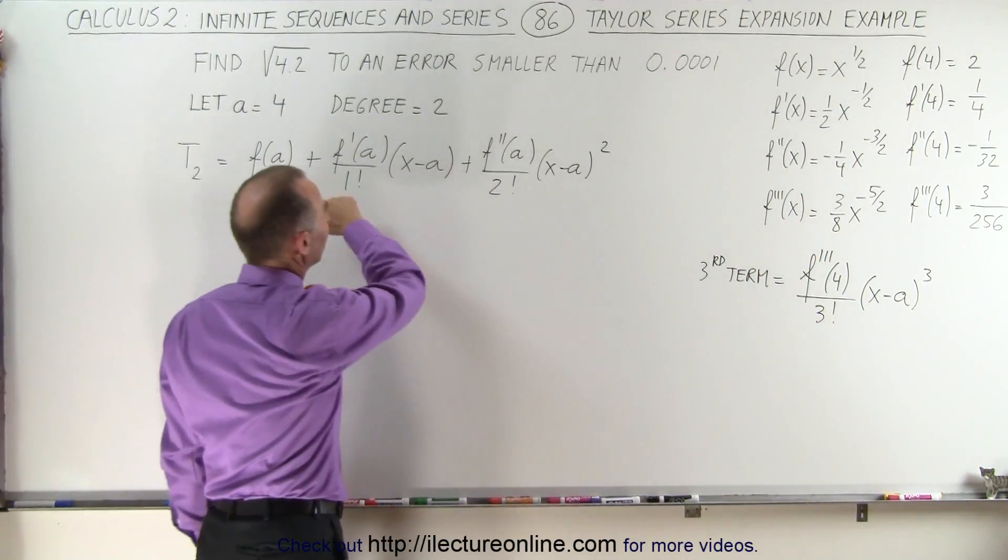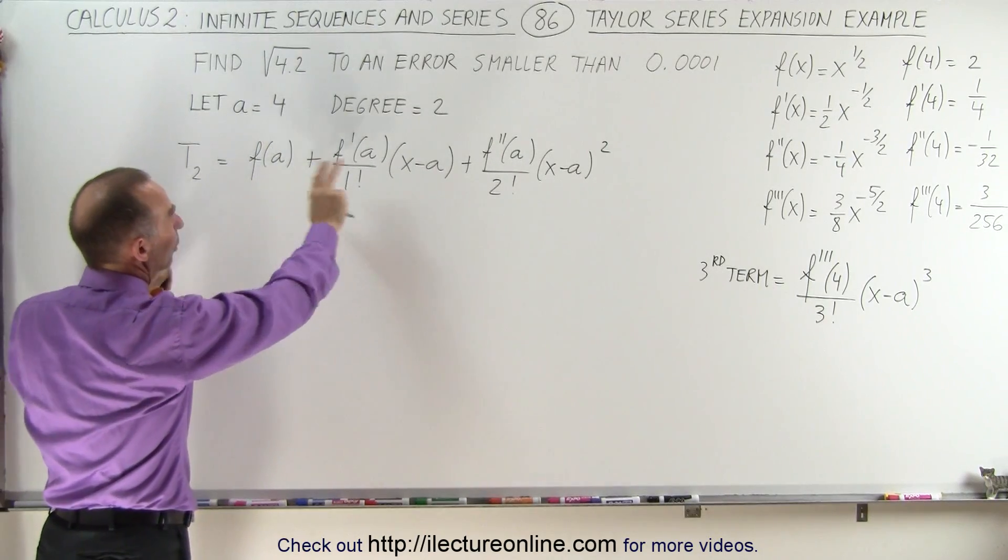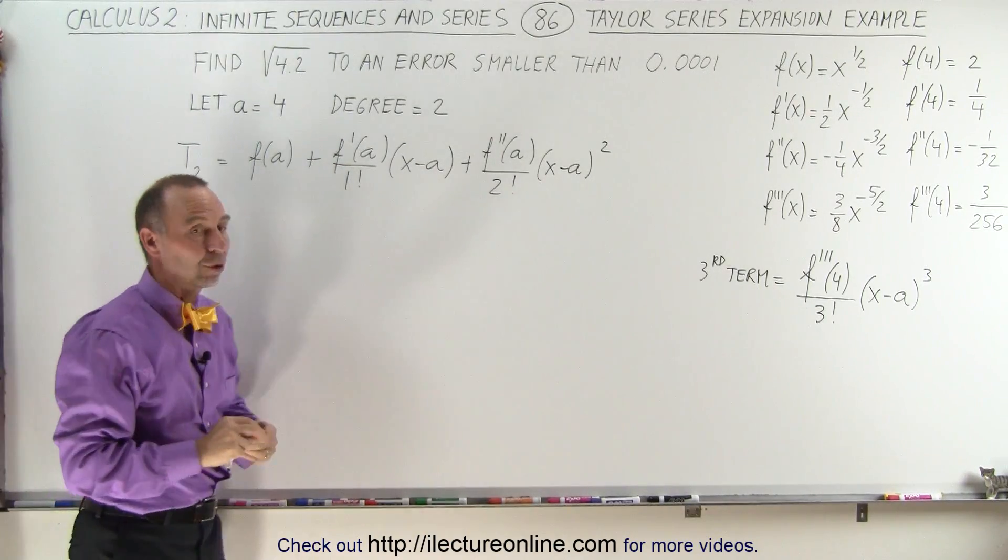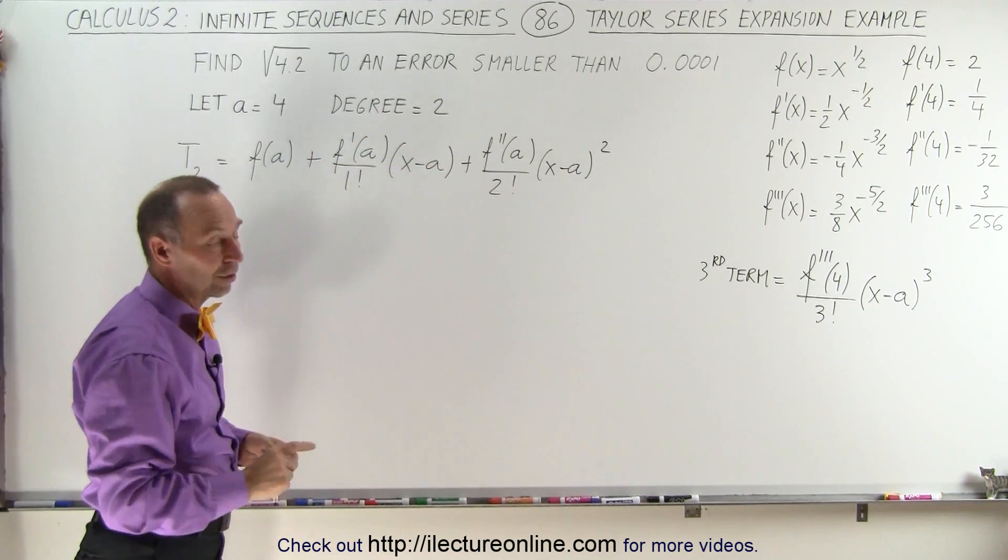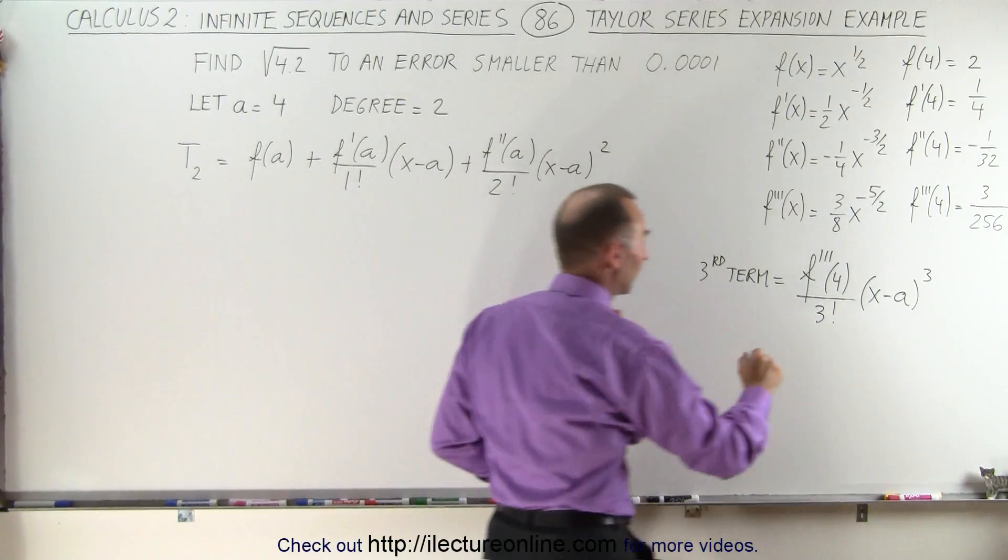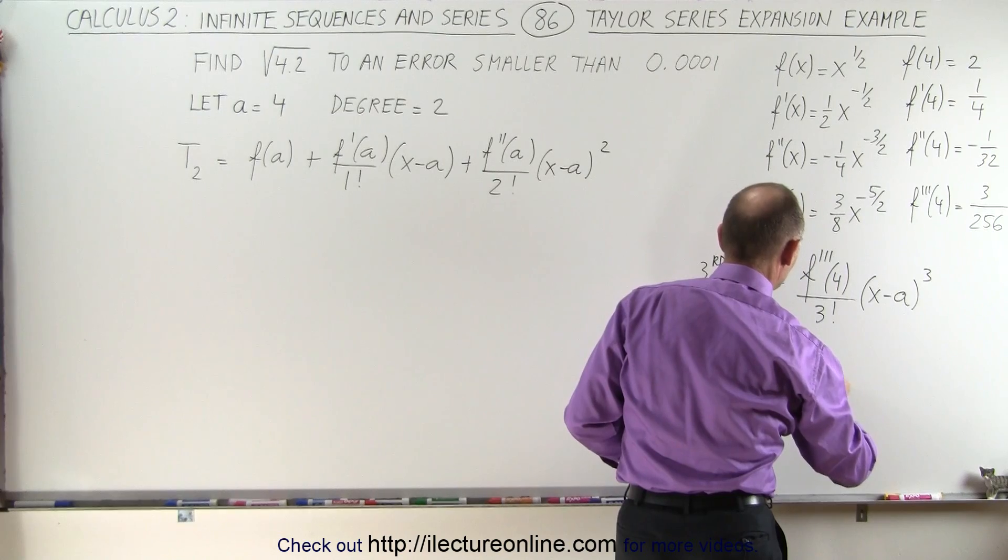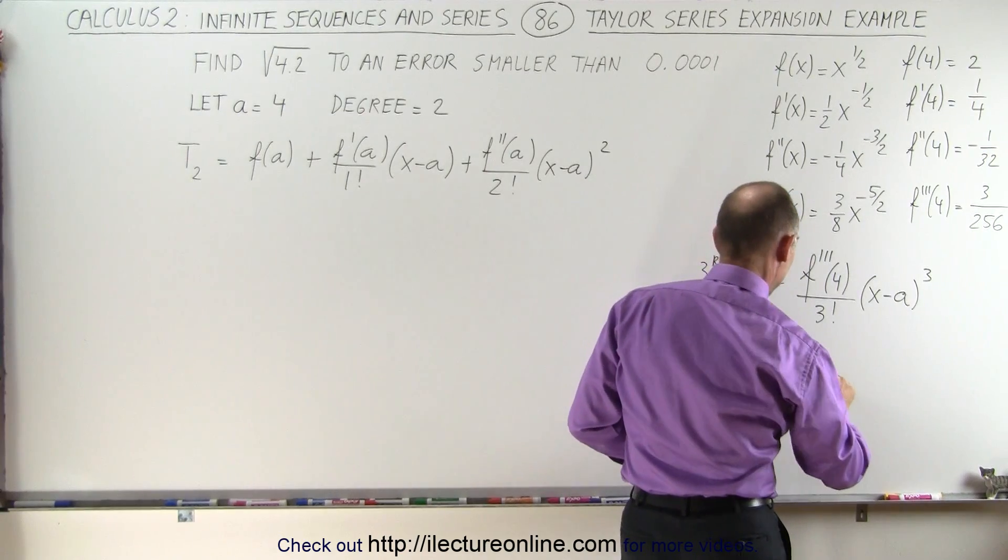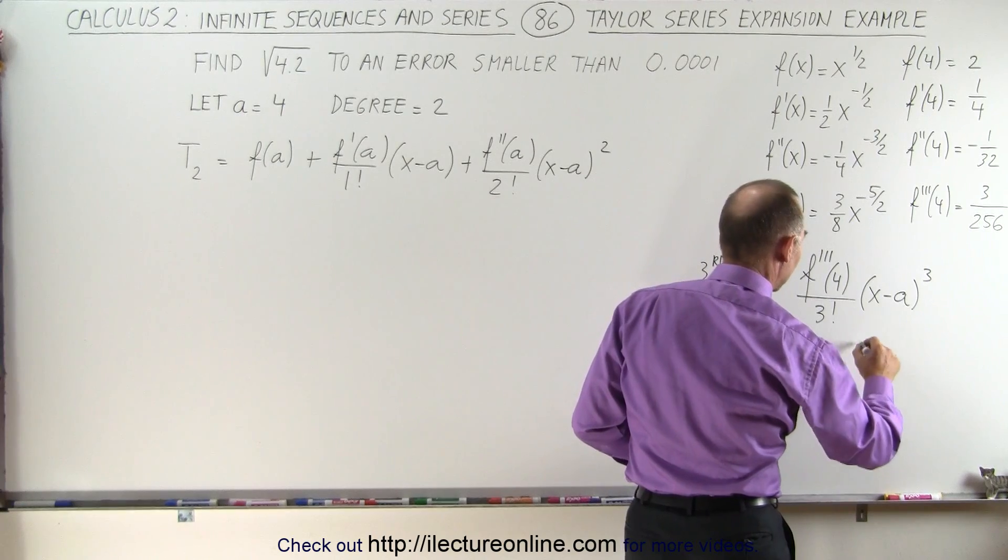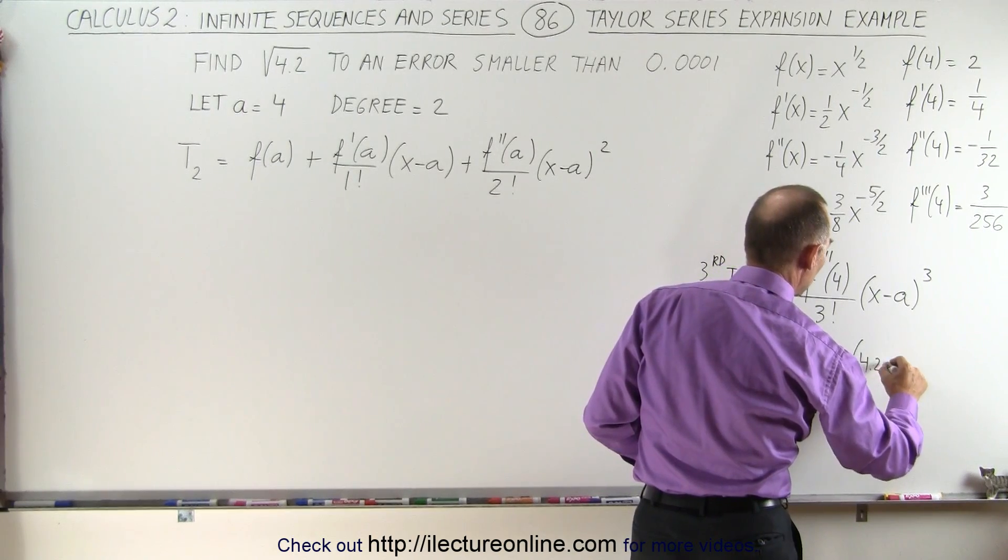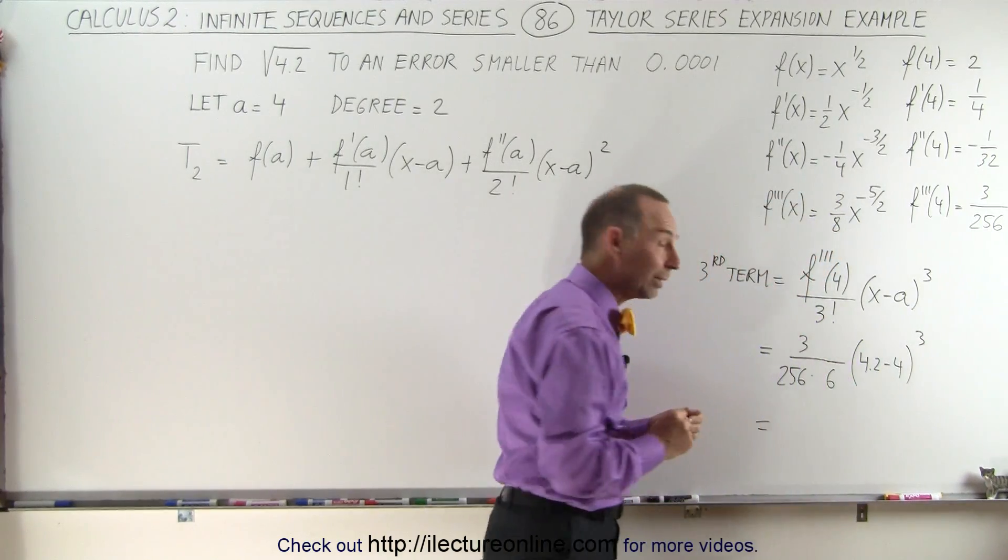That's the very next term in the series, but that's not going to be part of the evaluation here because we only want to take the first three terms, the constant term plus the first and second derivative term. So let's find out what the value of this is. This is going to be equal to 3 over 256 times 3 factorial in the denominator, which is times 6 and times 4.2 minus 4 raised to the third power.